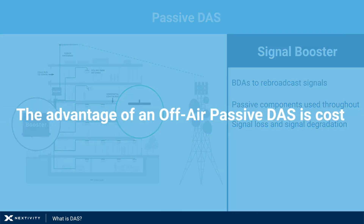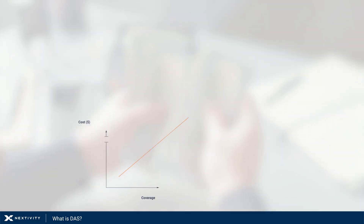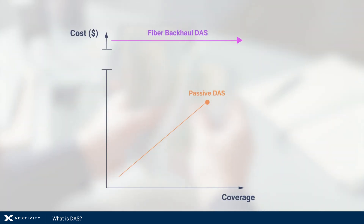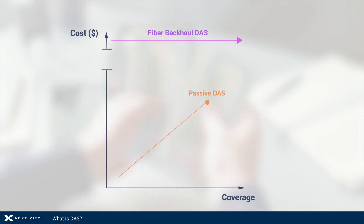The advantage of an off-air passive DAS is cost — these systems are relatively inexpensive compared to alternatives. When installed correctly to remediate a specific issue in a small space, a cheap repeater may work. But for reliable commercial use, a more robust solution will pay off in the long run.